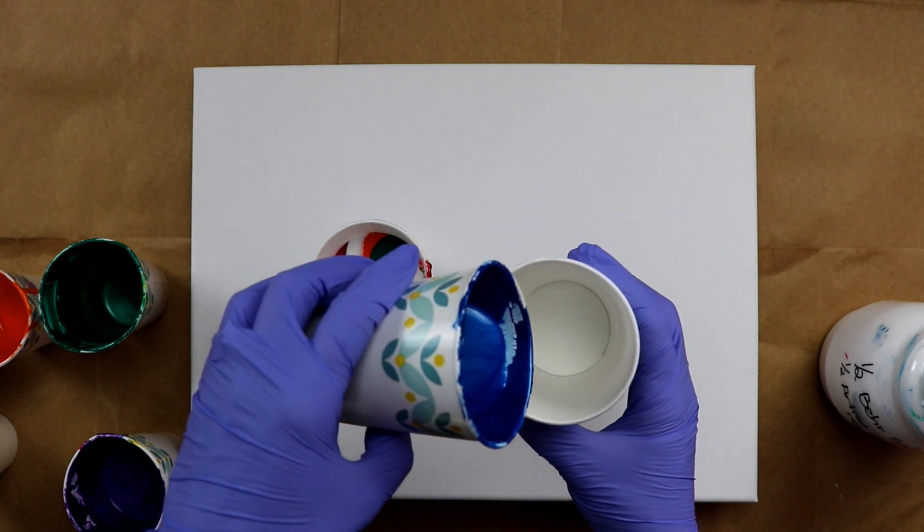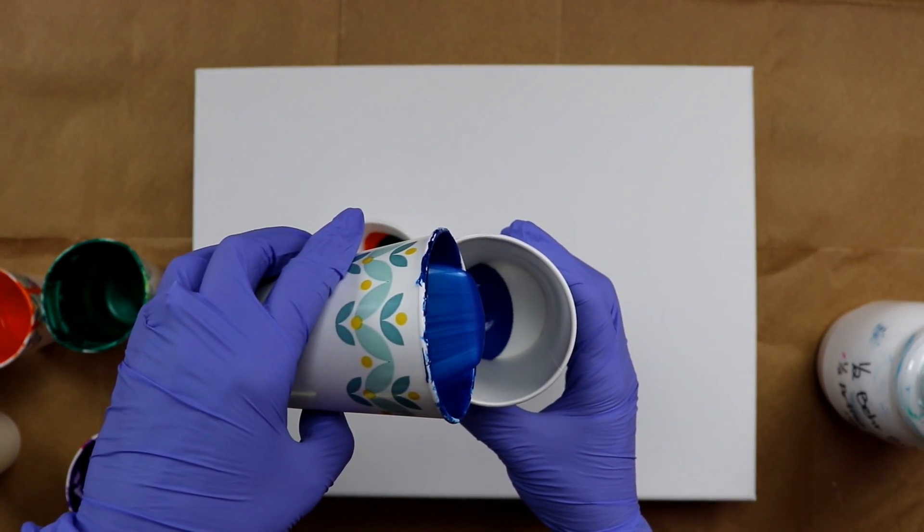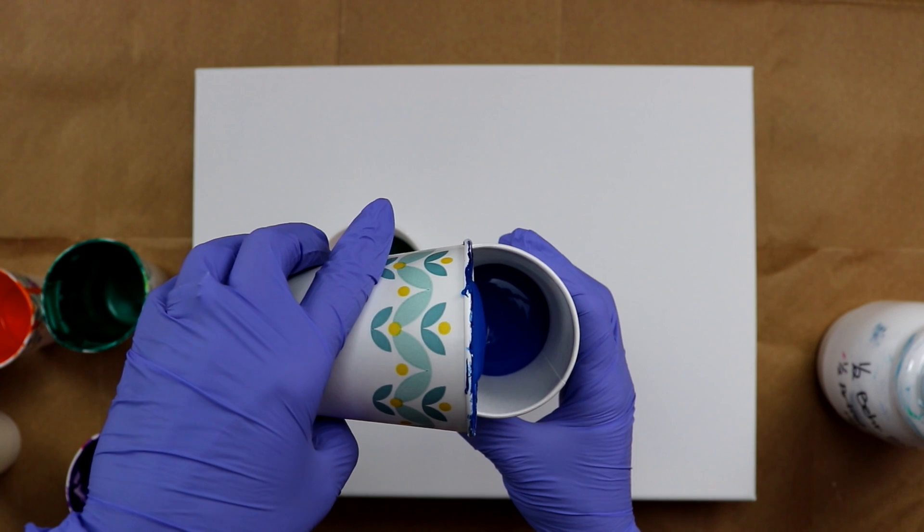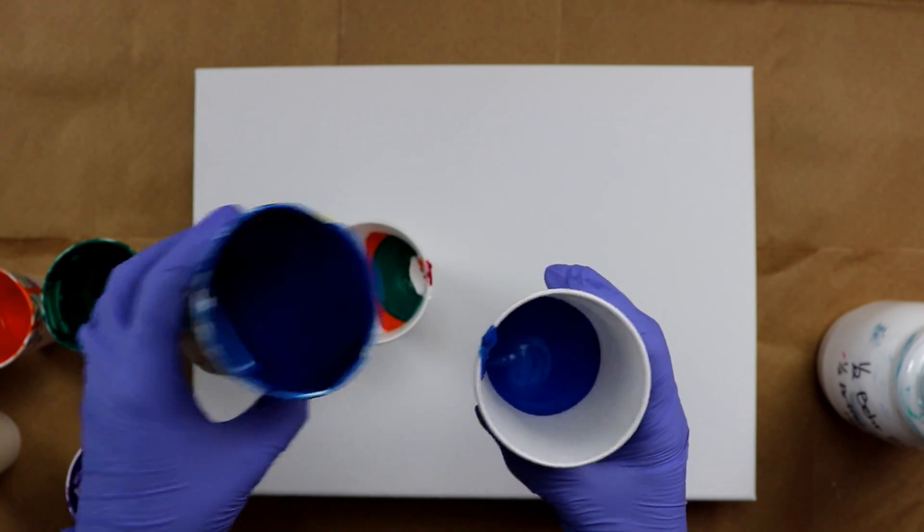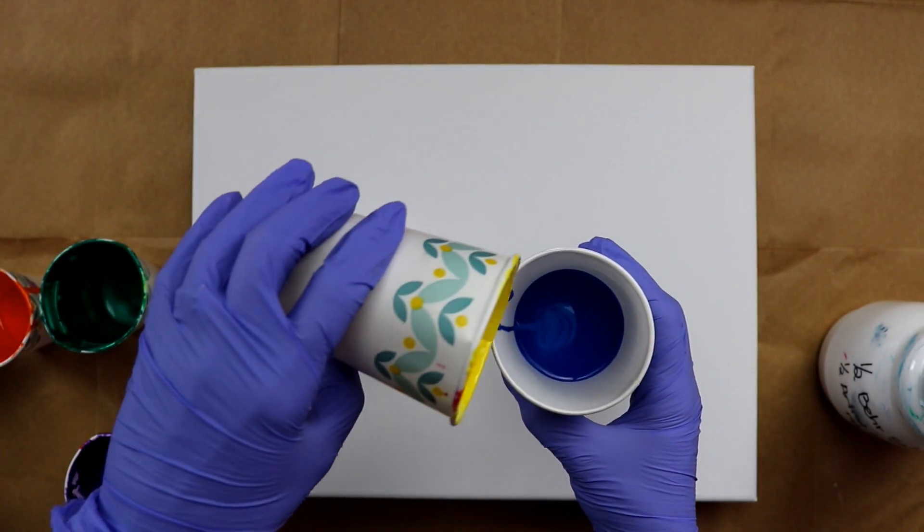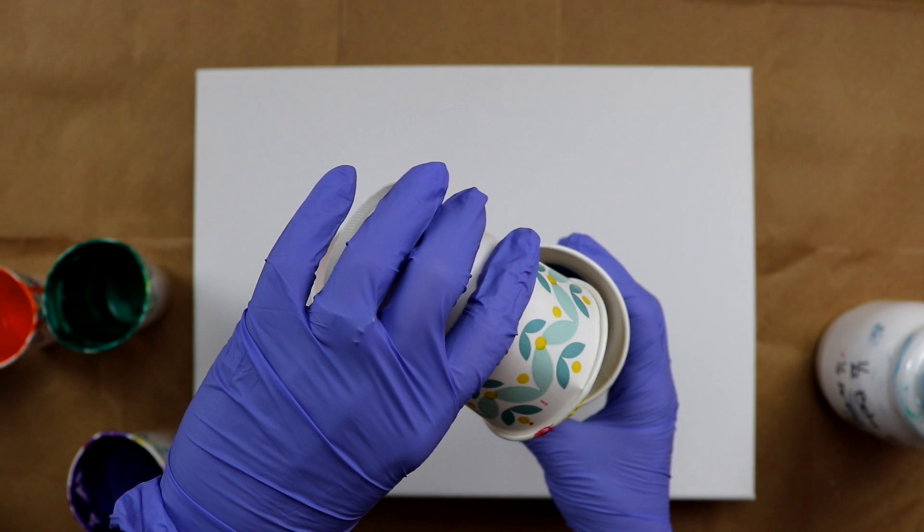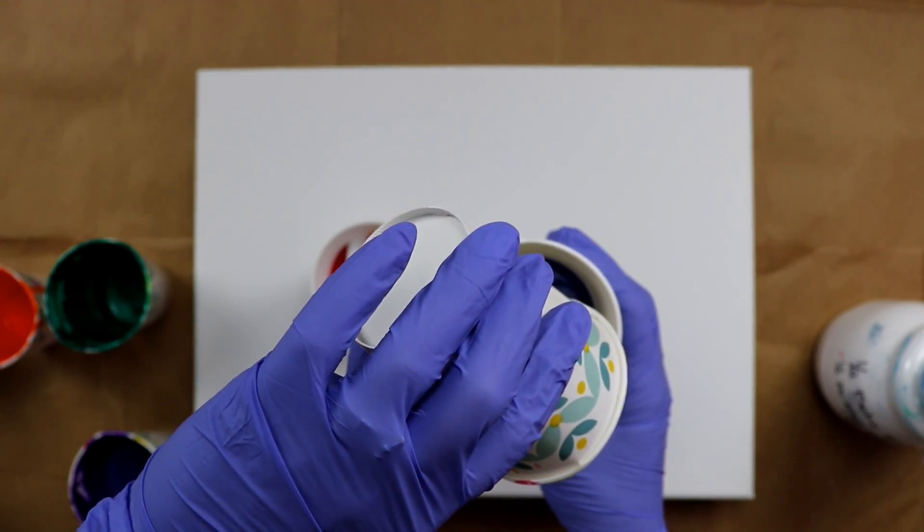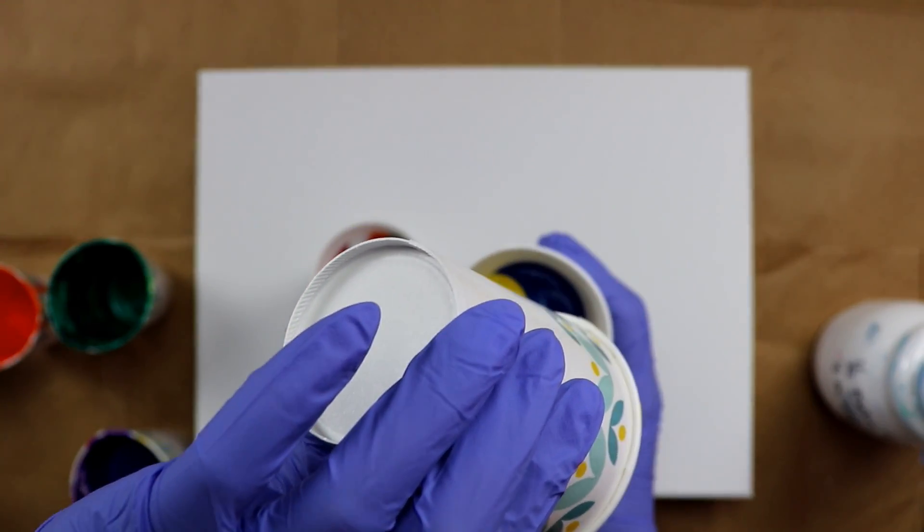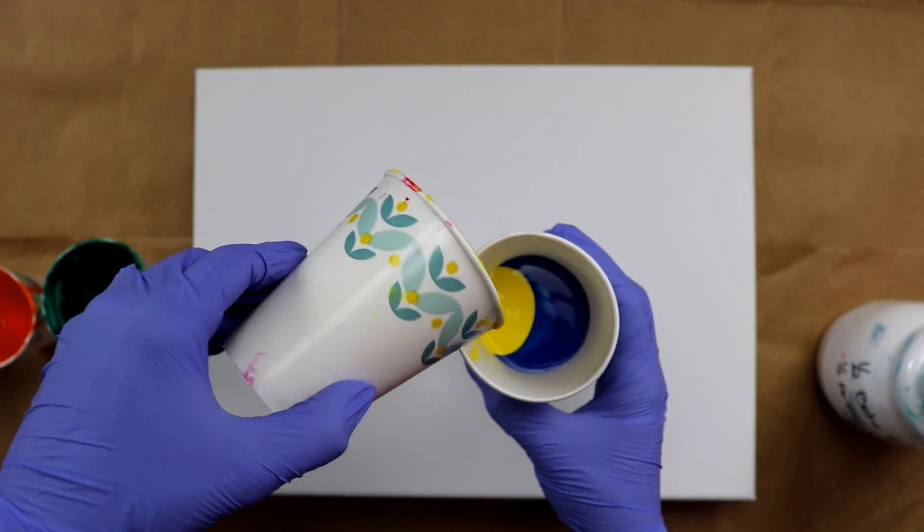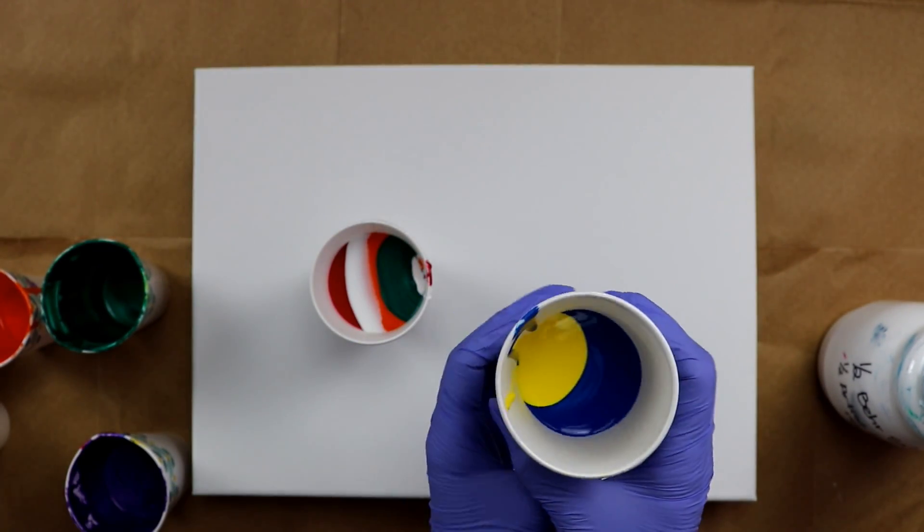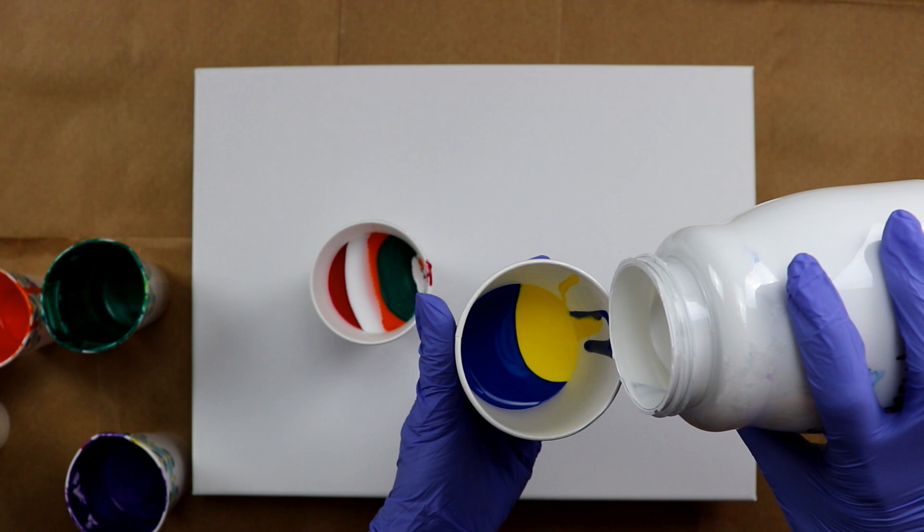Second cup, I'm starting with the Blue. And then I don't have much of this Yellow, so I'm going to dump all of it in there. All right, that's about all of that. Now I'm going to put the White.